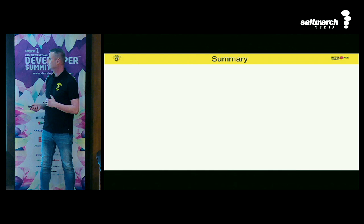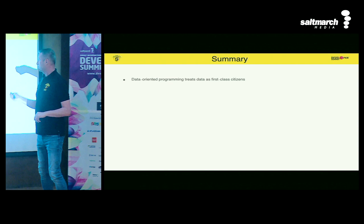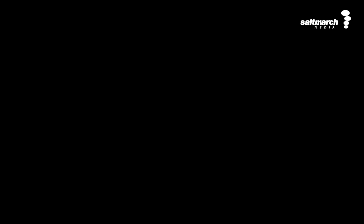In summary: data-oriented programming treats data as first-class citizens — you're really making decisions based on your data. It drives your application. Modern Java supports data-oriented programming via records, sealed classes, and pattern matching with switch expressions. Thank you very much for your time.